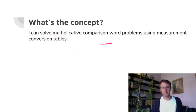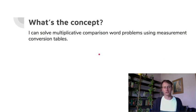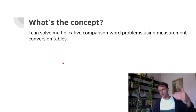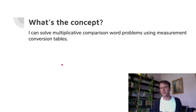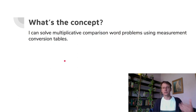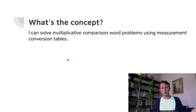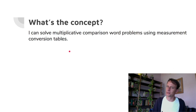Now we're at the multiplicative comparison word problems using measurement conversion tables. We're not actually going to use the tables here — you have those in your practice sheets from the first three lessons. This lesson is about working with these measurement systems, not reteaching multiplication step by step. The problem set is what we're doing now, so when we're done you'll actually be done with the problem set, and then there's the exit ticket and homework.